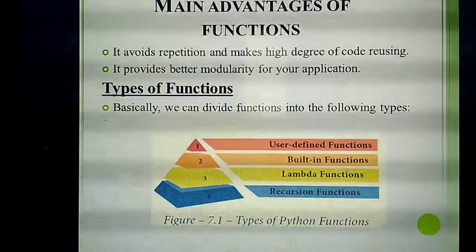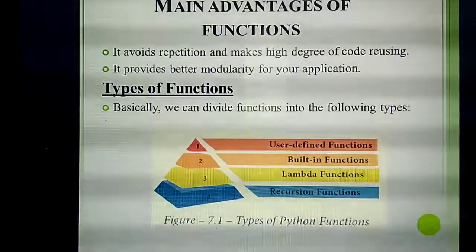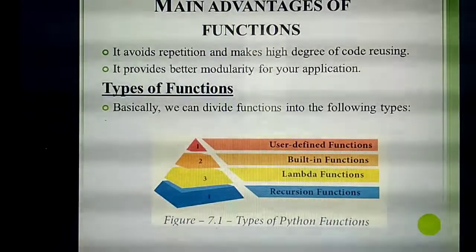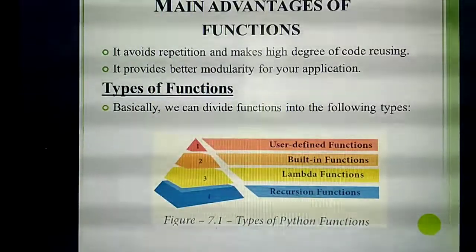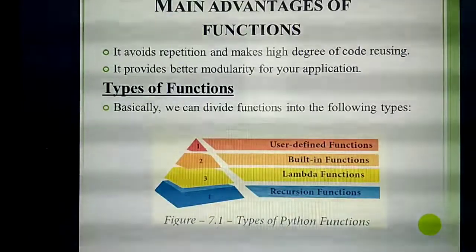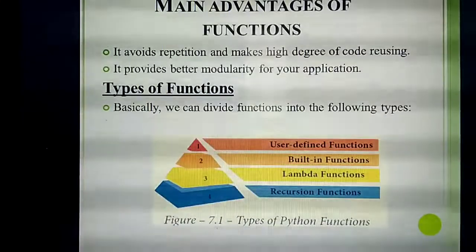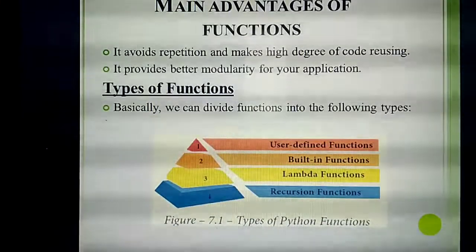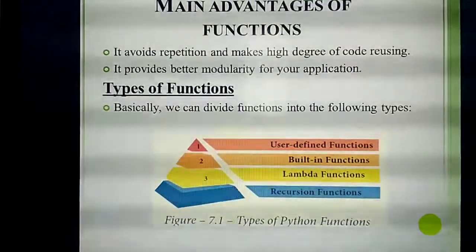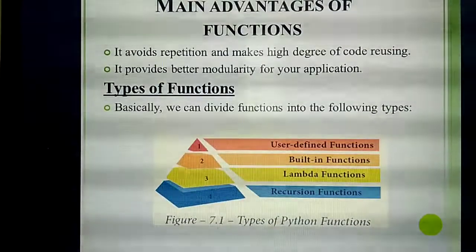Second advantage: high degree of code reusing. The same example — to display 47 student details, you can reuse the code 47 times. That's the meaning of high degree of code reusing.